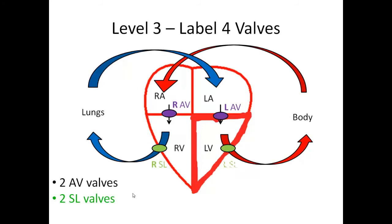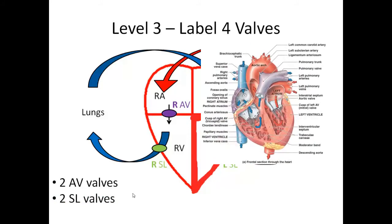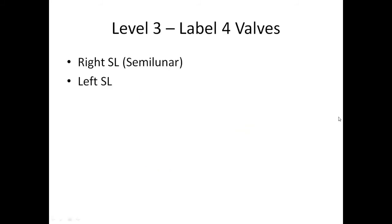Moving on to the semilunar valves — there's a right SL and a left SL. Note that in the diagram I'm drawing, the line comes out of the side of the heart for simplicity, but in the real heart the blood from the right ventricle goes up and out — the valve is located right there. I'm not drawing it perfectly here; in other levels we'll draw the lines more accurately.